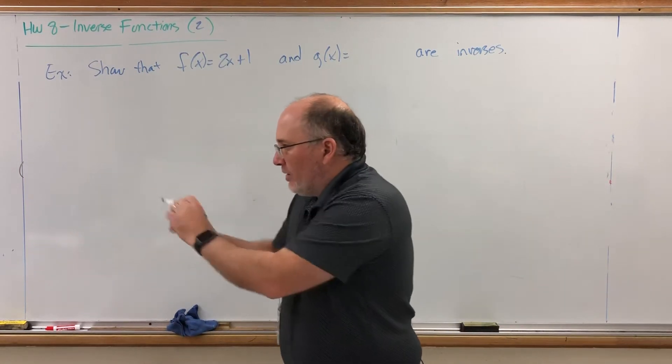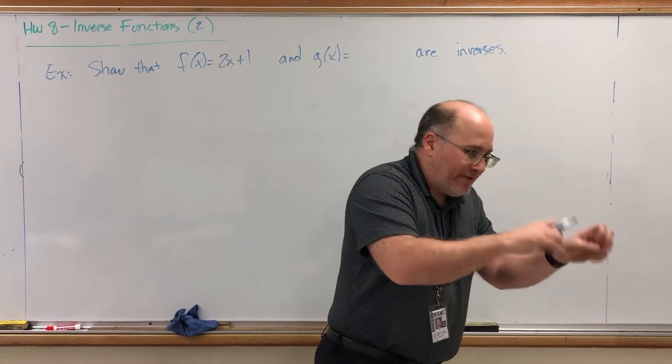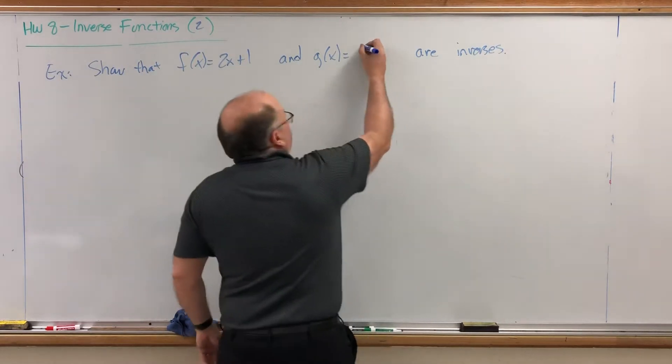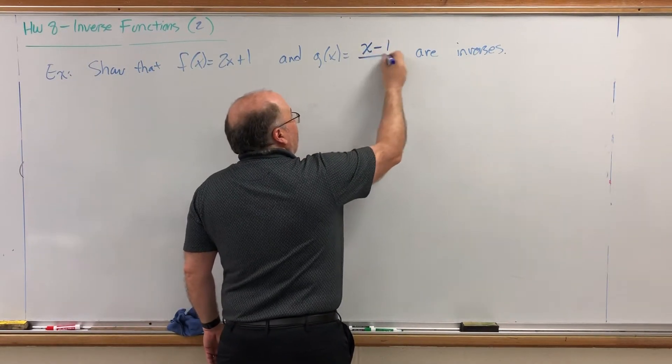Here, I am doubling and then adding 1. So how would I undo that? I would have to take off the 1 and then divide by 2. So my inverse function should be take a number, subtract 1, and then divide it by 2.